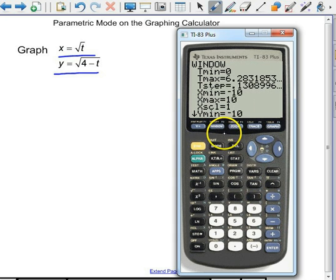Now when we go to our window, we have something new. We have a t min and a t max. And looking at what t can be, it can't be less than 0. And it can't be more than 4. So I'm going to go from 0 to 4. And I'll do a t step of 0.1. The smaller t step is, the more smooth my graph will be.